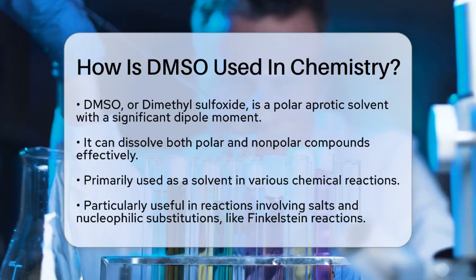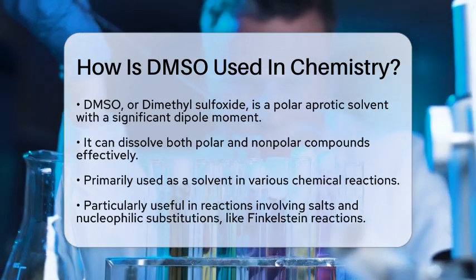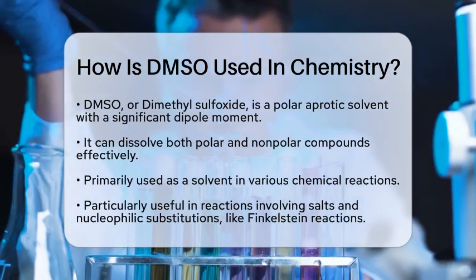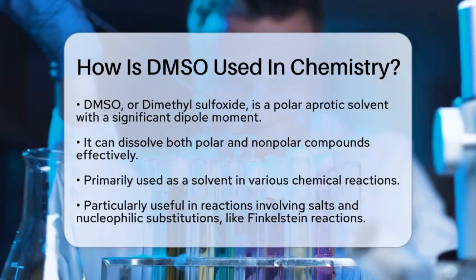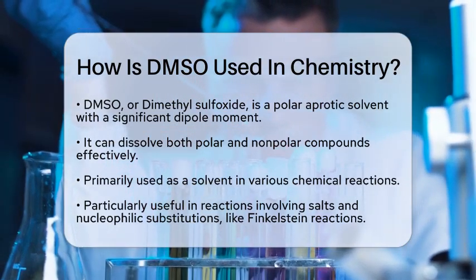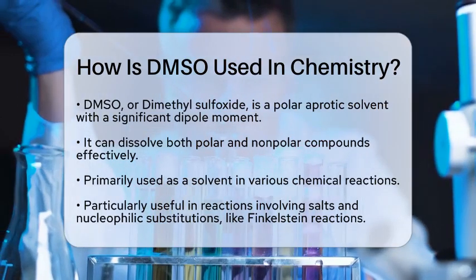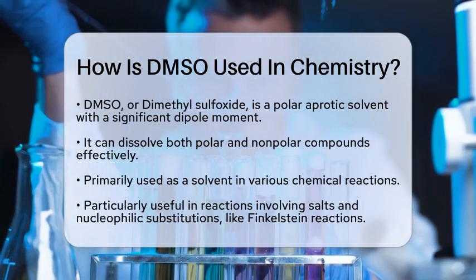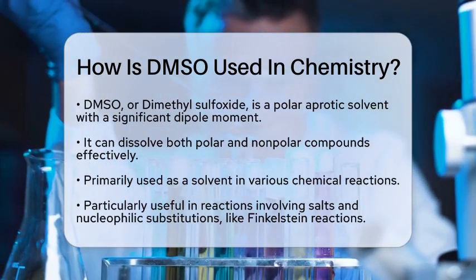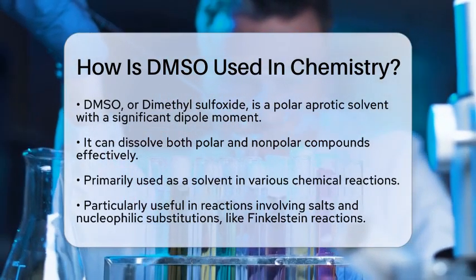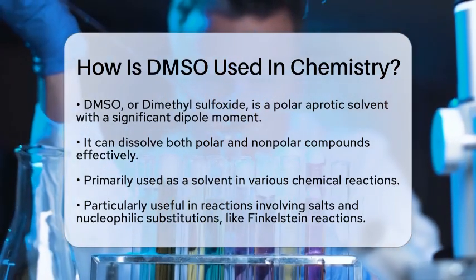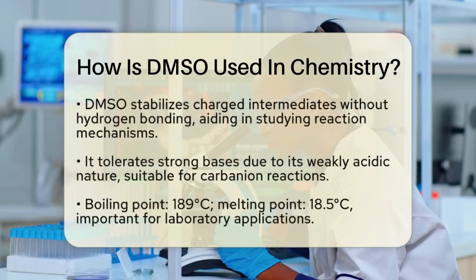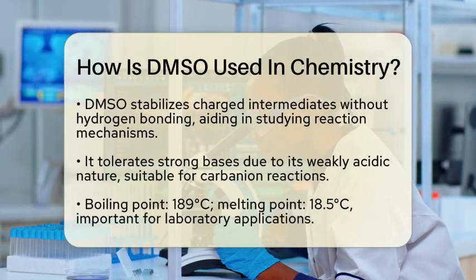In chemistry, DMSO is primarily used as a solvent for various chemical reactions. It is particularly useful in reactions involving salts and nucleophilic substitutions, such as Finkelstein reactions. The polarity of DMSO helps stabilize charged intermediates without engaging in hydrogen bonding. This makes it easier to study reaction mechanisms and facilitates specific synthetic transformations.